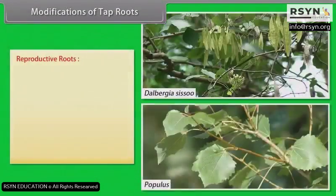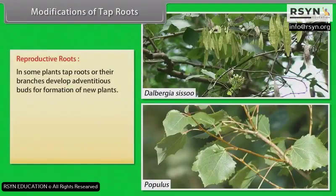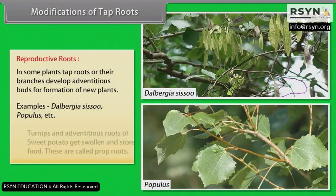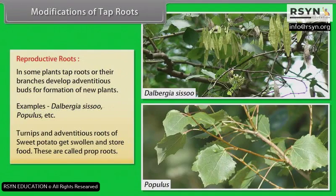Reproductive roots: In some plants, tap roots or their branches develop adventitious buds for formation of new plants. Examples: Dalbergia, Sissoo, Populus, etc. Turnips and adventitious roots of sweet potato get swollen and store food.